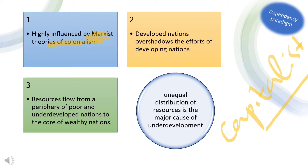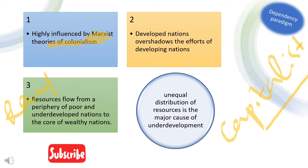Marxist theorists viewed persistent poverty as the consequence of capitalist exploitation. According to dependency theorists, developed nations overshadow the efforts of developing nations. In Raul Prebisch's point of view, resources flow from a periphery of poor and underdeveloped nations to the core of wealthy nations, enriching the latter at the expense of the former.